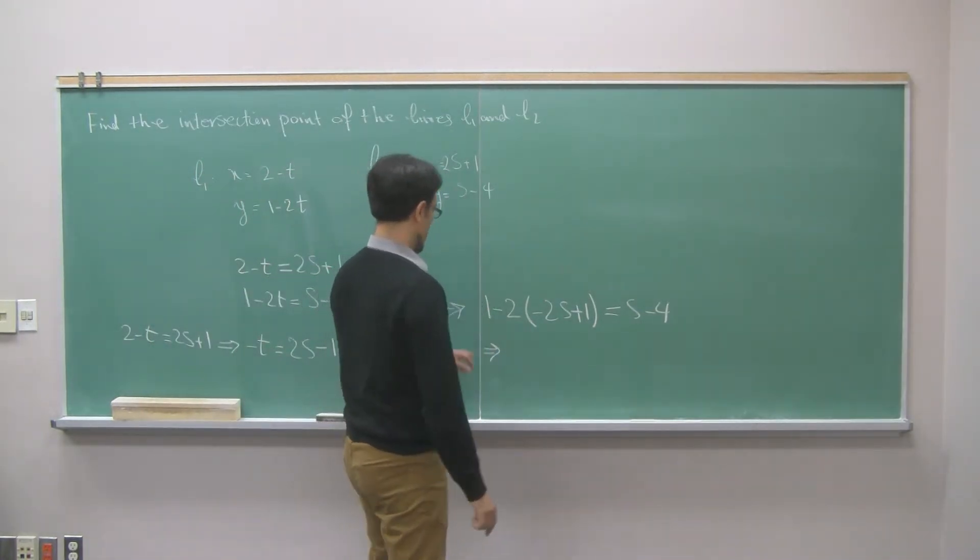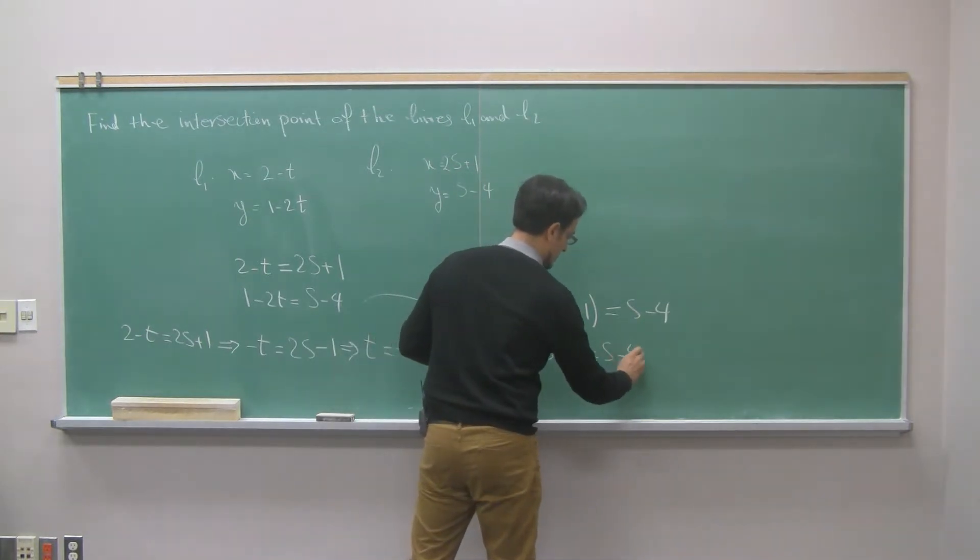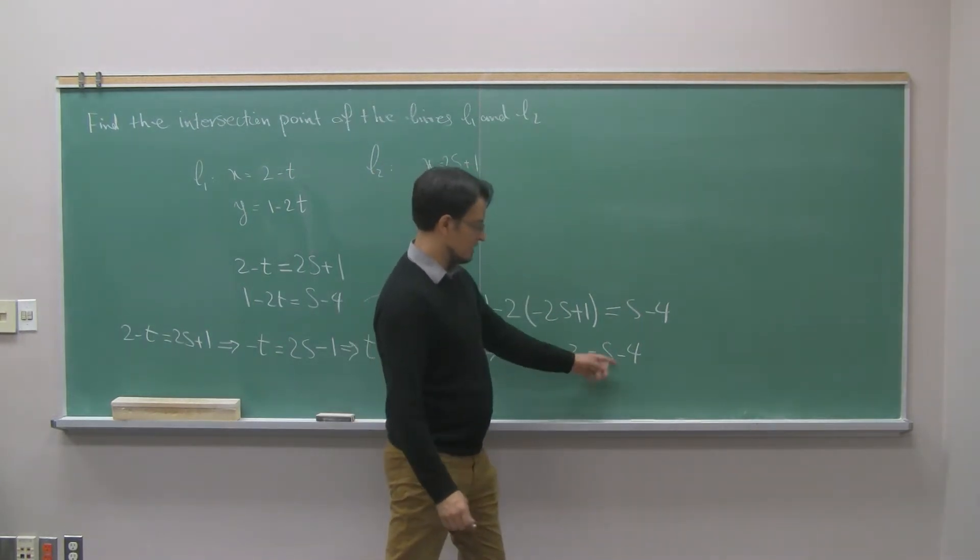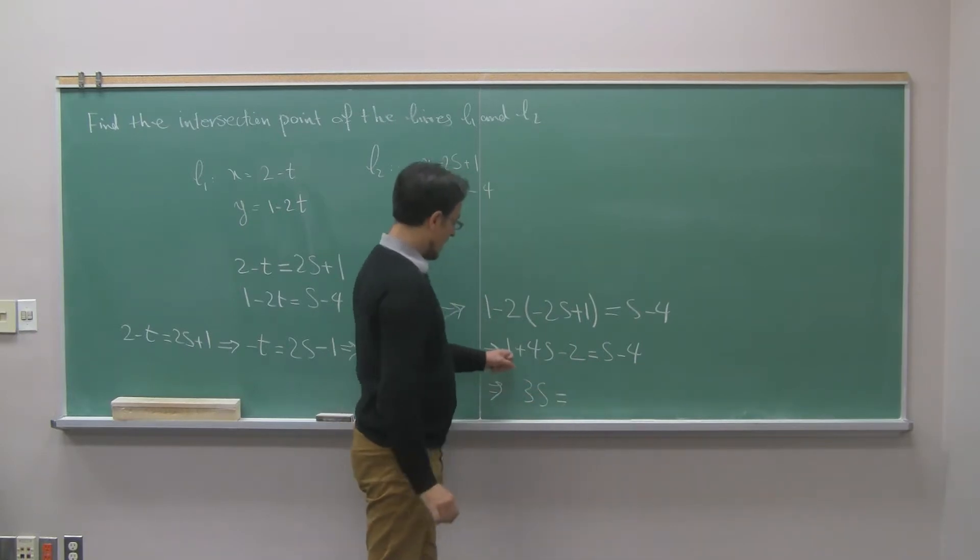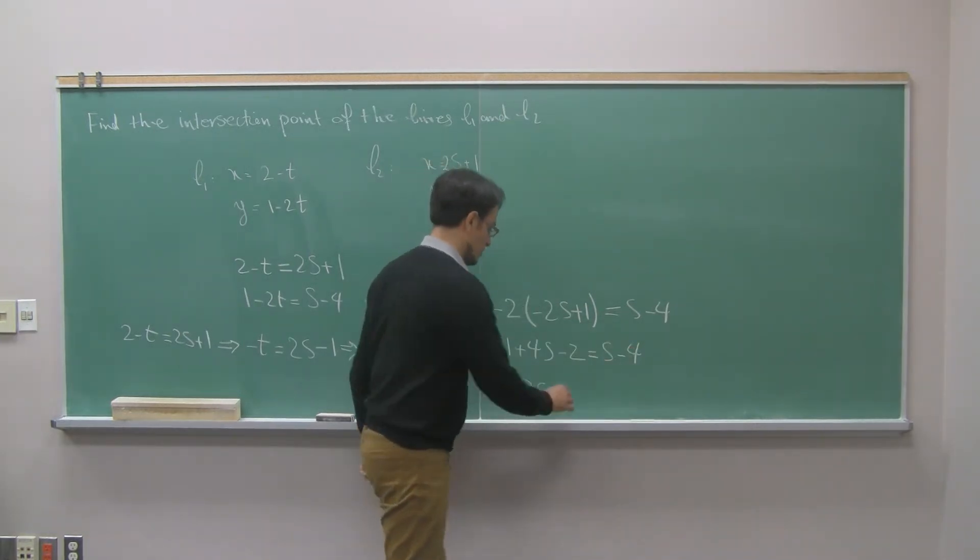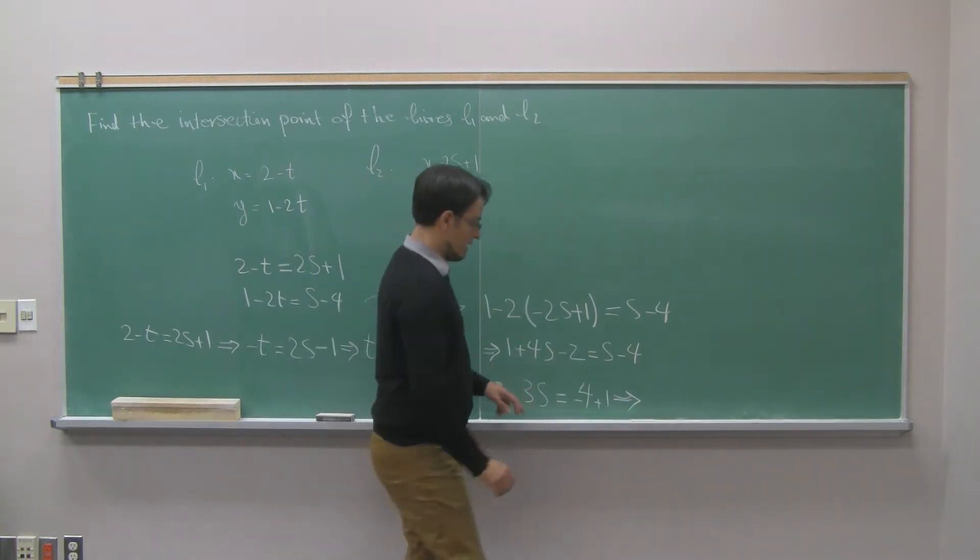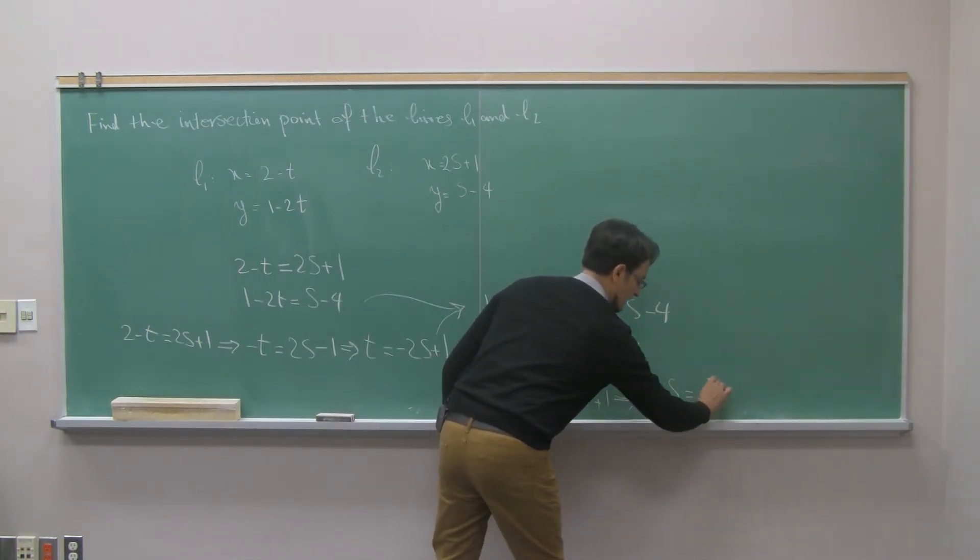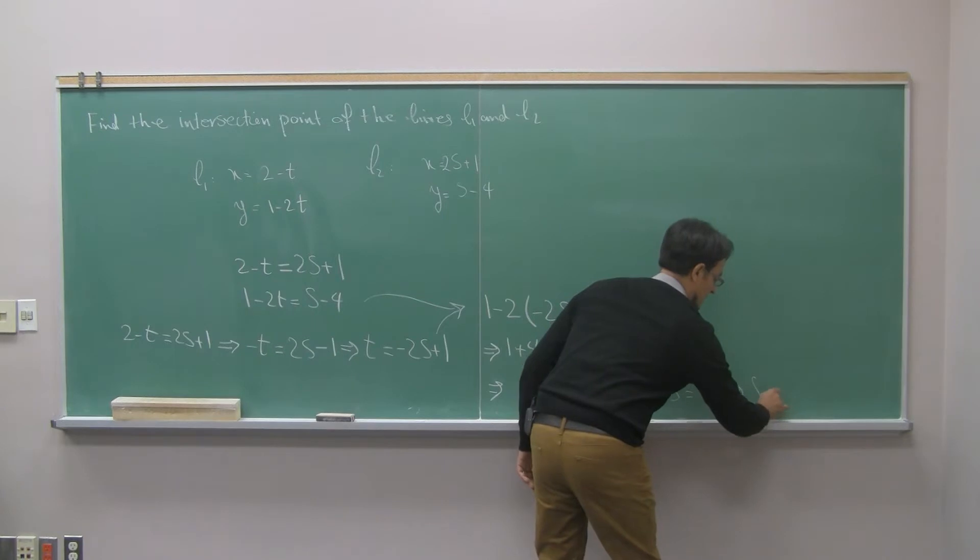So here, let's open this up. So I have 1, negative 2 times negative 2 is plus 4s. Negative 2 times 1 is negative 2, and this is 2s minus 4. I have s here, s here. Taking all s to one side, I will have 3s here. I have 1 minus 2 constant is negative 1. Taking negative 1 to the other side, it will be negative 4 plus 1, which gives me 3s equals negative 3. Then divide by 3, and you get s is negative 1.